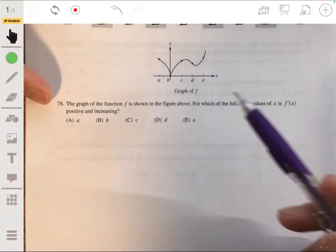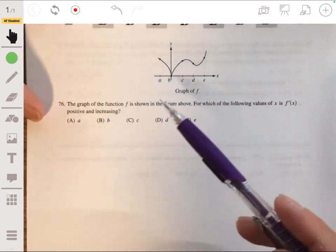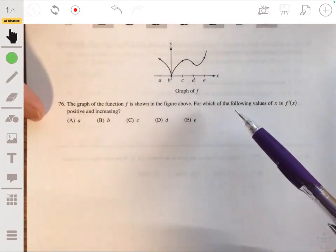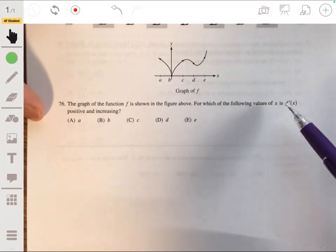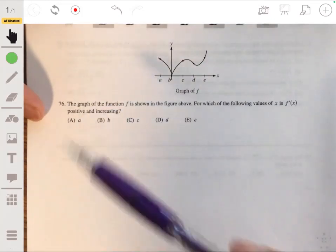All right, problem 76. We have the graph of f, and we're asked which of the following values of x is f prime of x positive and increasing.